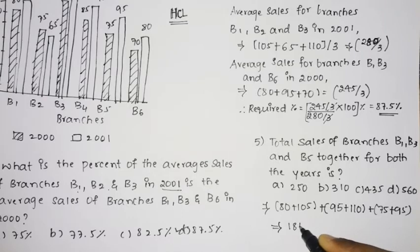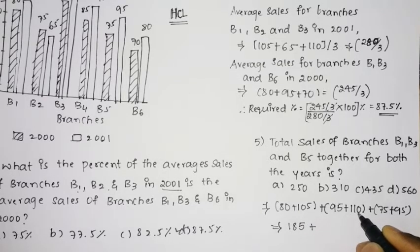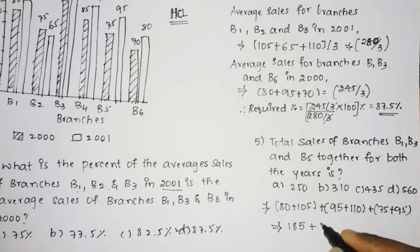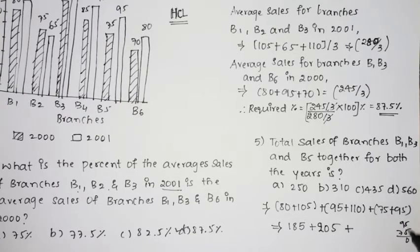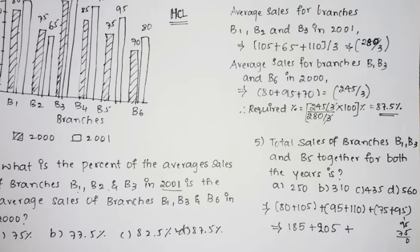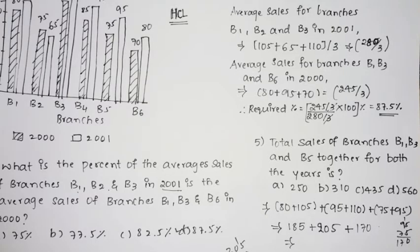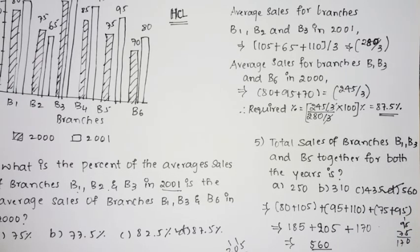Calculating: 80 plus 105 is 185. Then 95 plus 110 is 205. Then 75 plus 95 is 170. Adding everything together: 185 plus 205 plus 170 gives us 560. So 560 is the correct answer for this question — option D. Thank you friends for watching, and do subscribe to our channel for more updates.